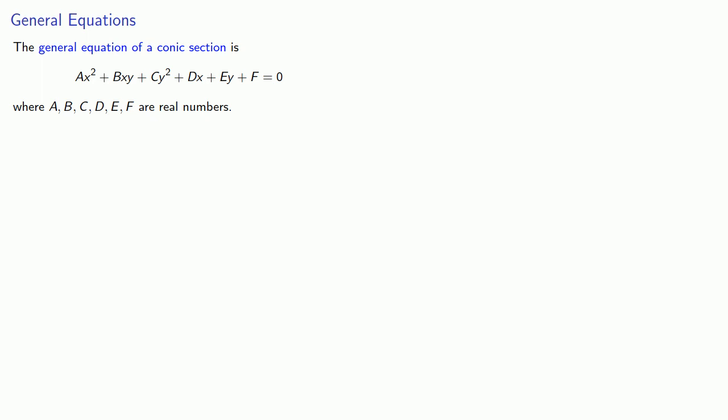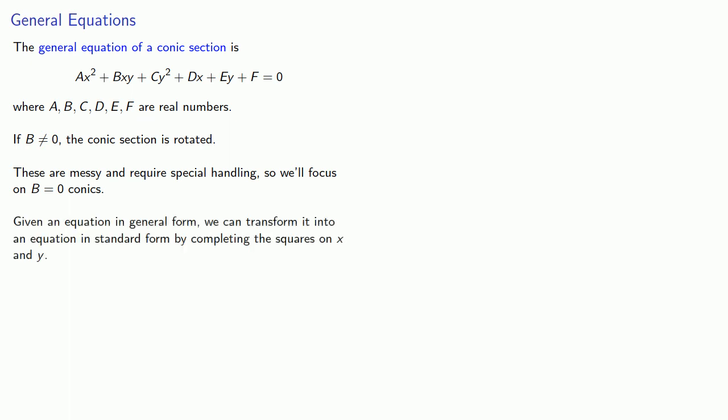The general equation of a conic section is ax² + bxy + cy² + dx + ey + f = 0, where a, b, c, d, e, and f are real numbers. If b is not equal to 0, the conic section is rotated. These are messy and require special handling, so we'll initially focus on the b equals 0 conics. Given an equation in this form, we can transform it into an equation in standard form by completing the squares on x and y.